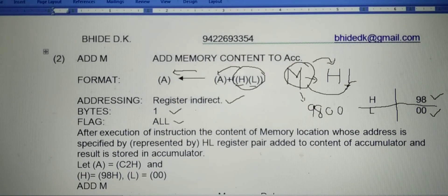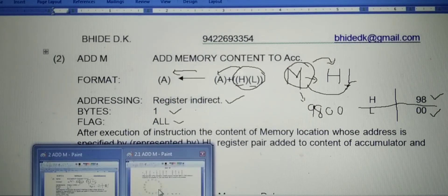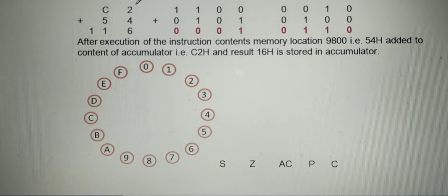Let the content of register A equal to C2. In accumulator, already number C2 is present. And here memory is represented by 9800. In that memory location, the number 54 is present.